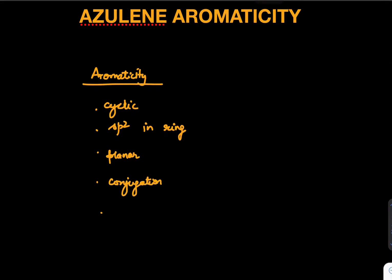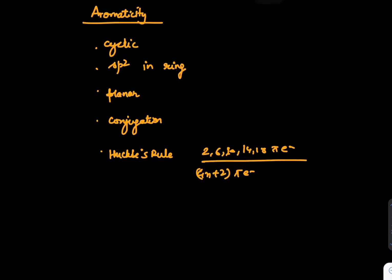Most importantly, it should follow Huckel's rule. What is Huckel's rule? 2, 6, 10, 14, or 18 pi electrons moving inside, which is also known as 4n plus 2 pi electrons moving inside. So this is the fundamental of aromaticity.